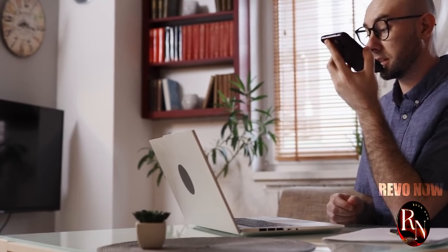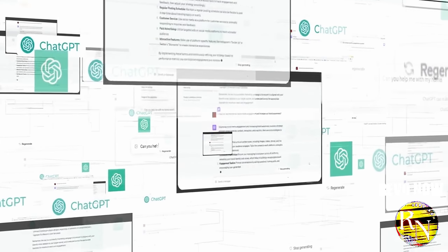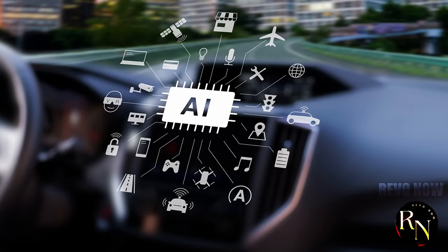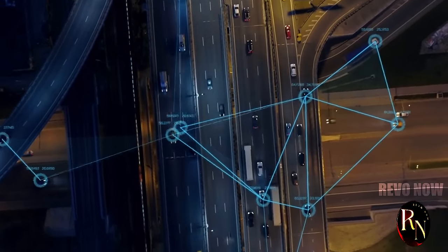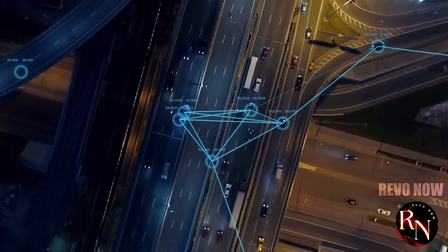Imagine a world where your phone can instantly translate languages with incredible accuracy, not just word for word, but with the nuances and context of a human translator. This could break down communication barriers and bring people closer together. Picture self-driving cars that can navigate complex environments with ease, making transportation safer and more efficient.